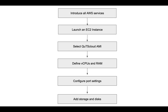Let's get started. For this tutorial, I'm going to first show you all the basic AWS services, then how you can launch an EC2 instance, how to select the QTS Cloud AMI from the Community AMI, how to define the CPU and RAM configuration, the port settings, and finally adding the storage and disk. This flow chart gives you an idea of how to deploy QTS Cloud on AWS and helps you understand the steps involved.